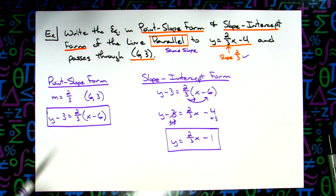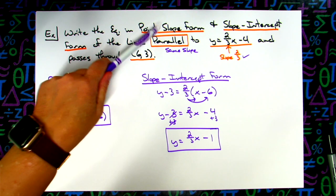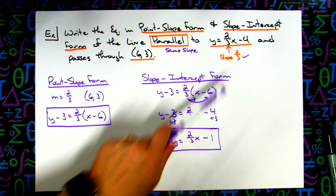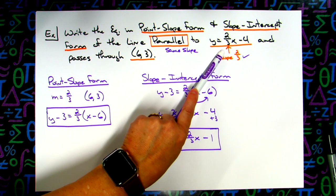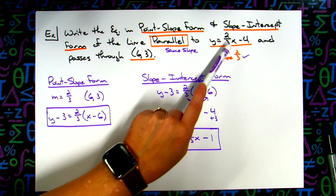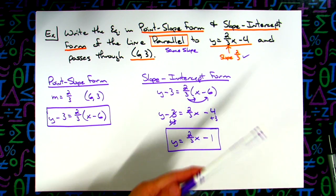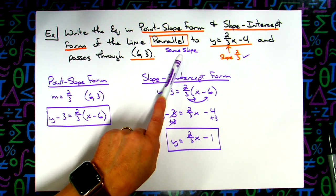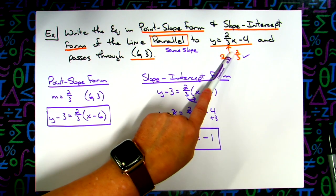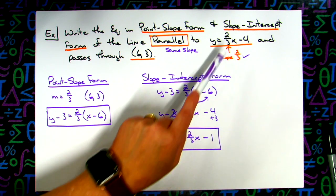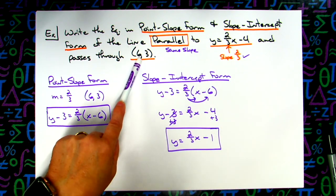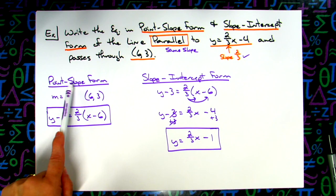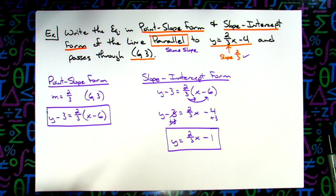That's just one example — they could have given this equation in standard form or point-slope form, and you would need to find the slope first. Parallel always means you use the same slope as the line they give you. Once you find that slope and you're given a point, it's always good to start with point-slope form because you know the slope and you know a point.